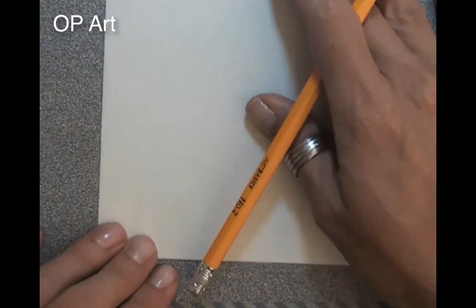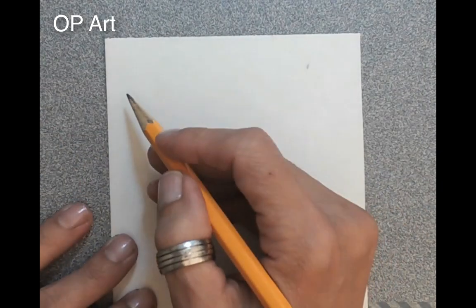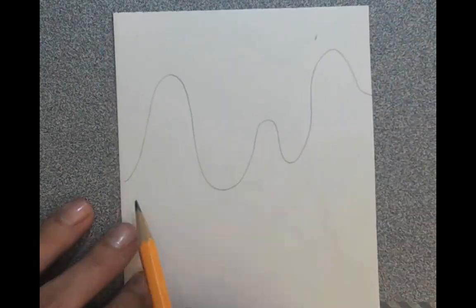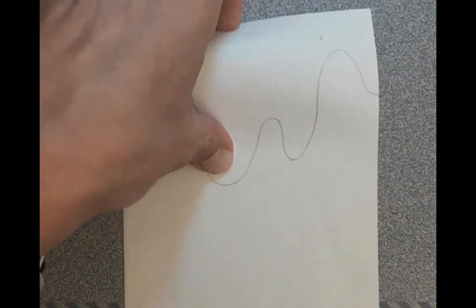First thing you're going to need to do is decide with your op art piece if you want it to be vertical or horizontal. For this one I'm going to do a vertical template.